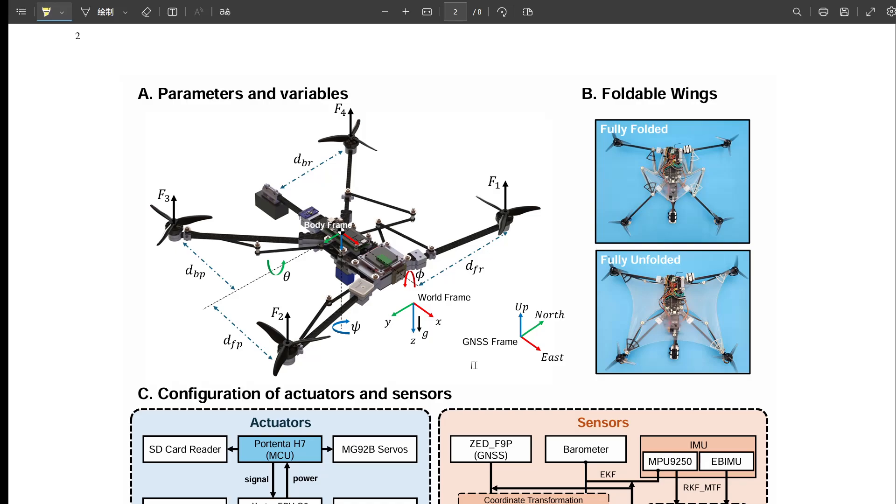And the key idea, the reason this adds agility, is that deploying the wings creates extra air resistance. It's not like an airplane wing generating lift. Precisely. It's not for sustained flight. It's about using that controllable drag. Think of it like a dynamic airbrake, or a way to generate extra sideways force for quick turns or stops.